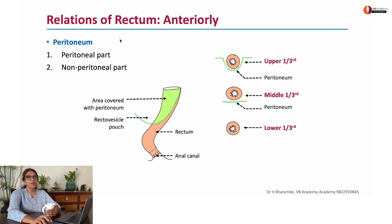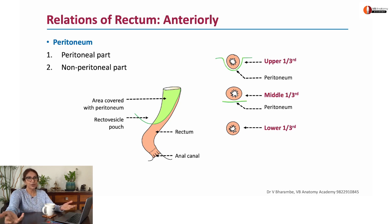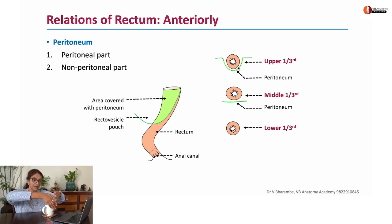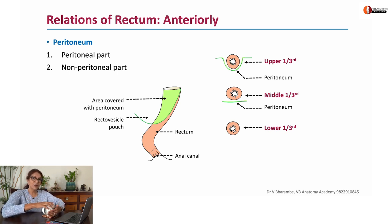The rectum is covered by peritoneum — but only a part of it. You can see how the peritoneum gently curves over the upper and middle parts of the rectum. The upper one-third is covered anteriorly and on the sides by peritoneum. The middle one-third is covered only in the front by peritoneum, and the lower part remains non-peritoneal.